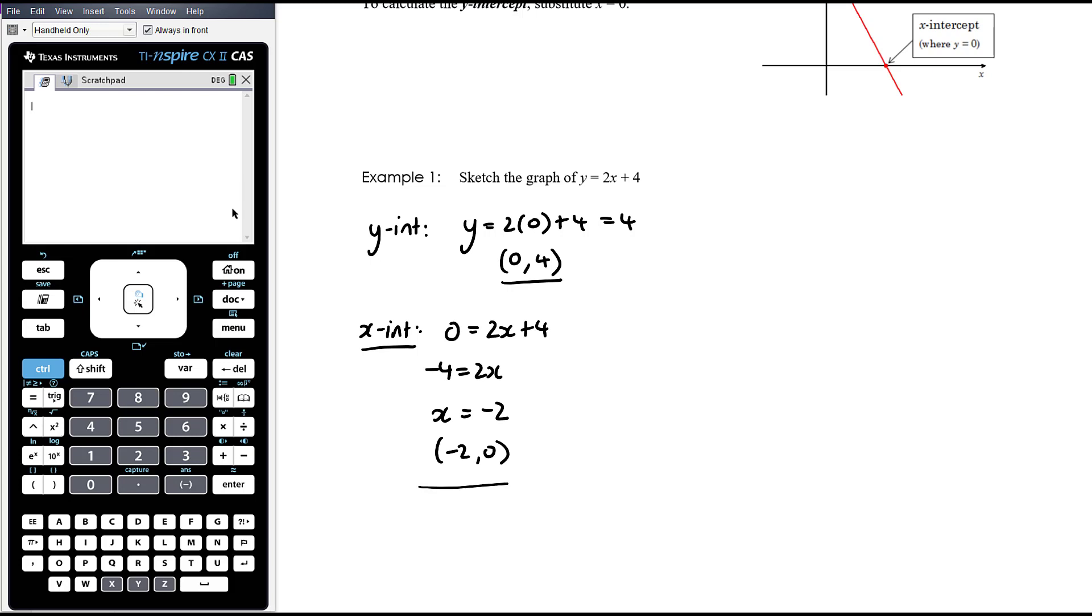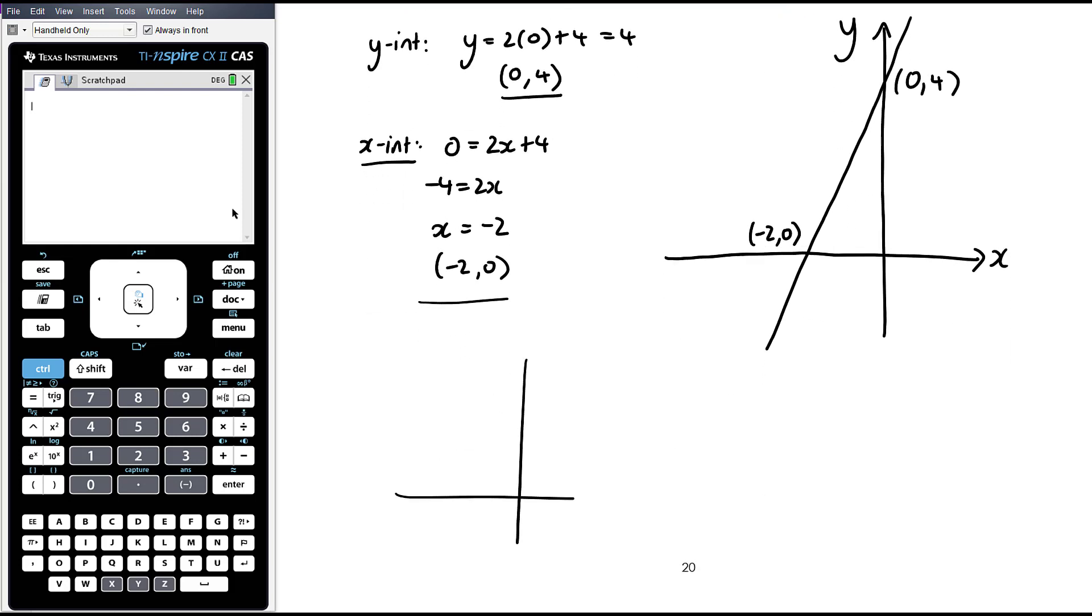Now thinking about where my y intercept is and where my x intercept is and drawing a suitable axis, I'm not going to draw out a big elaborate scale. I'm just going to think about I'm going to aim to cross my y axis somewhere up here. My x intercept is about half of my y intercept. I'm going to aim to cross my x axis somewhere about here. I'm not going to draw in those points. That's literally just what I'm thinking. I wouldn't even draw in those circles. I would just draw in a line that does that. And I would label those points as zero four and negative two zero.